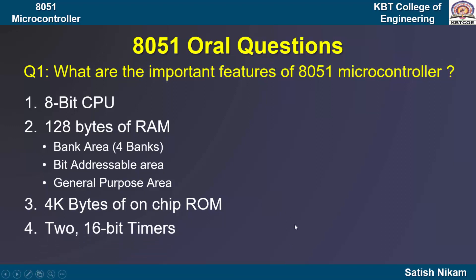8051 has two 16-bit timers, that is Timer 0 and Timer 1. These timers are used to generate a delay between two events, and they can also be used as a counter in counting applications.